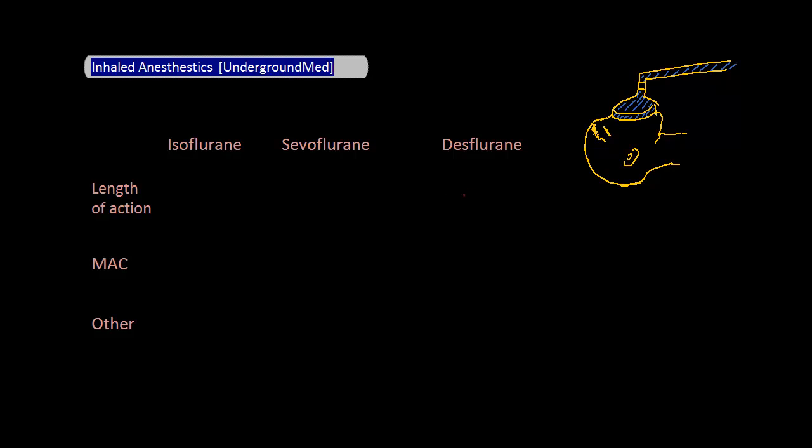Desflurane is the shortest acting and the most expensive. It has a MAC of 6, and you can see why it'd be nice to use in a short case, because the wake-up will be faster. It's said to be more irritating to the airways, so it's another consideration when trying to wake up someone with reactive airway disease, or in a neuro case, where you want to minimize bucking on the tube during the wake-up.